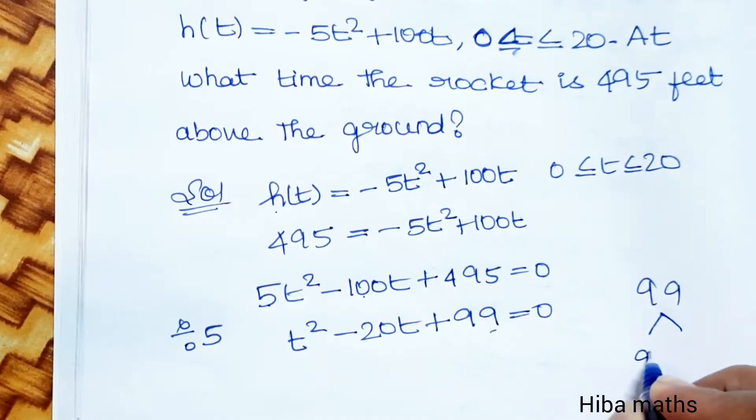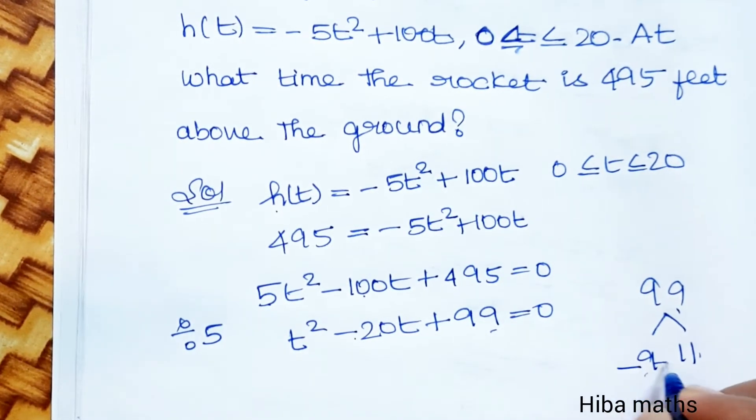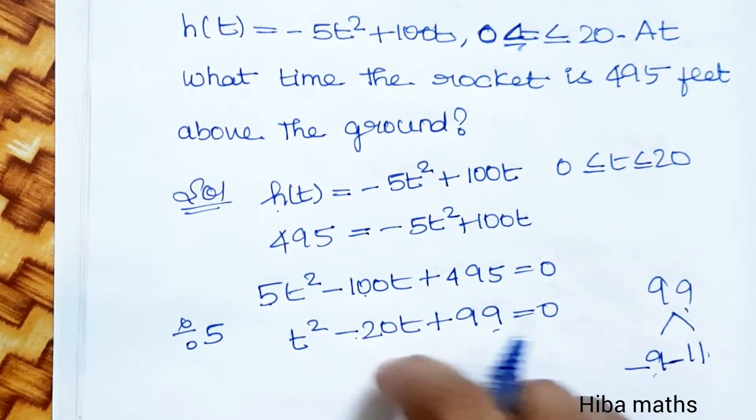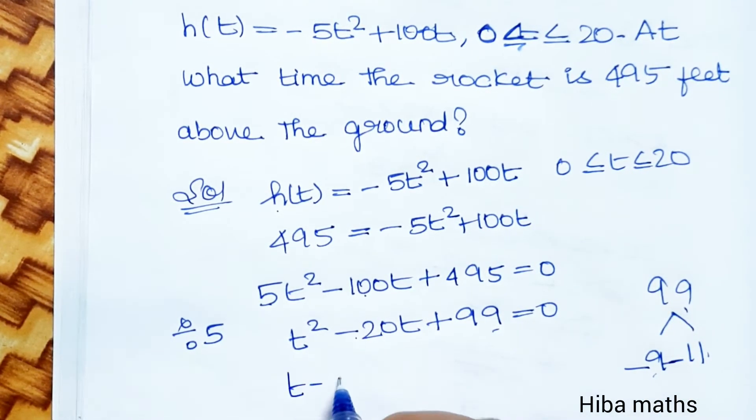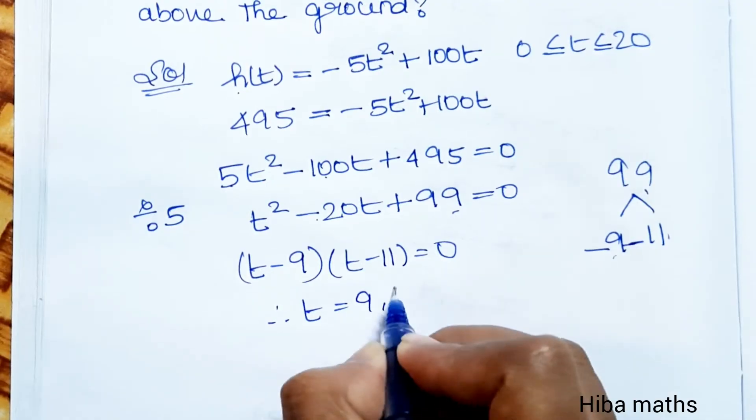Now factoring: 9 times 11 equals 99, and 9 plus 11 equals 20. Both negative to give minus 20. So t minus 9 times t minus 11 equals 0. Therefore t equals 9 or 11.